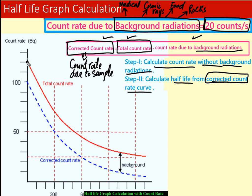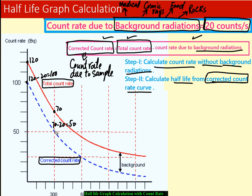Looking at the graph, the total count rate starts at 120. Subtracting the background of 20 gives a corrected count rate of 100. At the next point, the total count rate is about 70, so 70 minus 20 gives 50. At the following point, 45 minus 20 gives 25. This produces the corrected count rate curve.